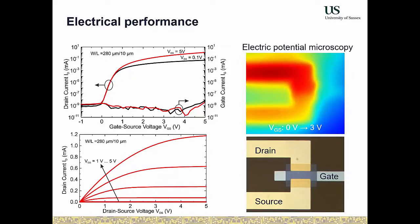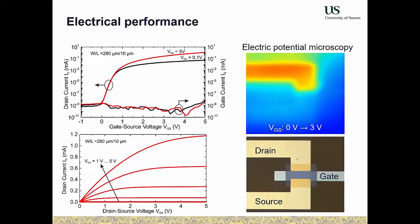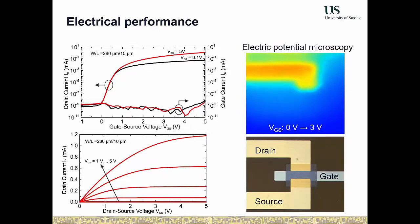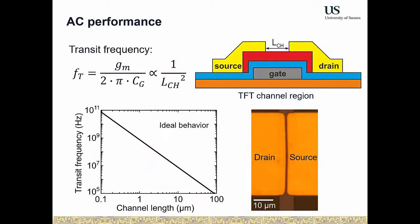Since we are interested in fabricating analog circuits, the DC characteristic is helpful but what really matters is the AC performance. We use the transit frequency as a figure of merit — the unity gain current gain frequency of a transistor — which gives an idea of speed. The transit frequency of a single transistor is always larger than the usable speed of a circuit by something like a factor of 10.